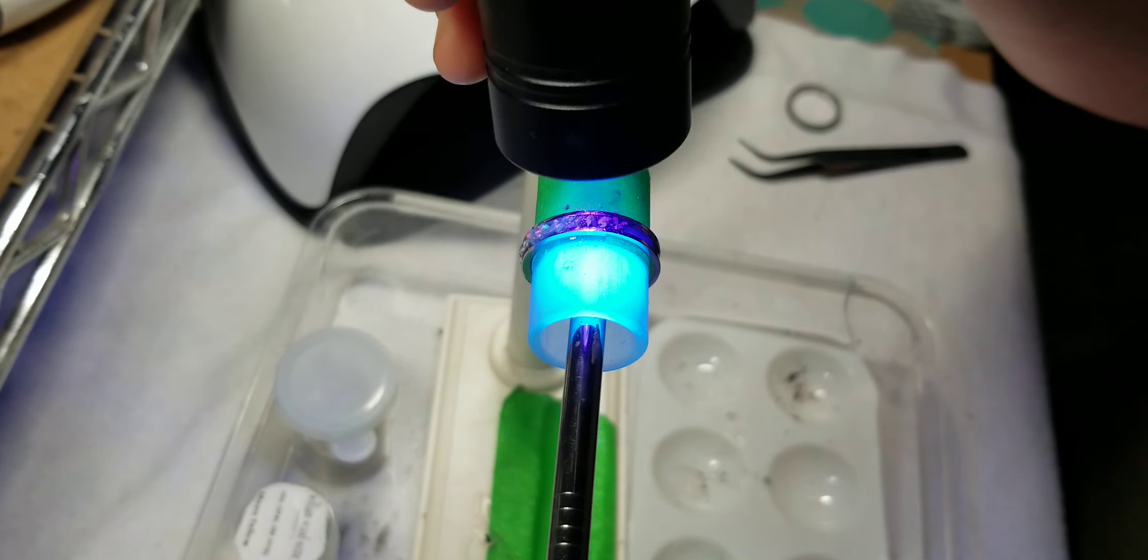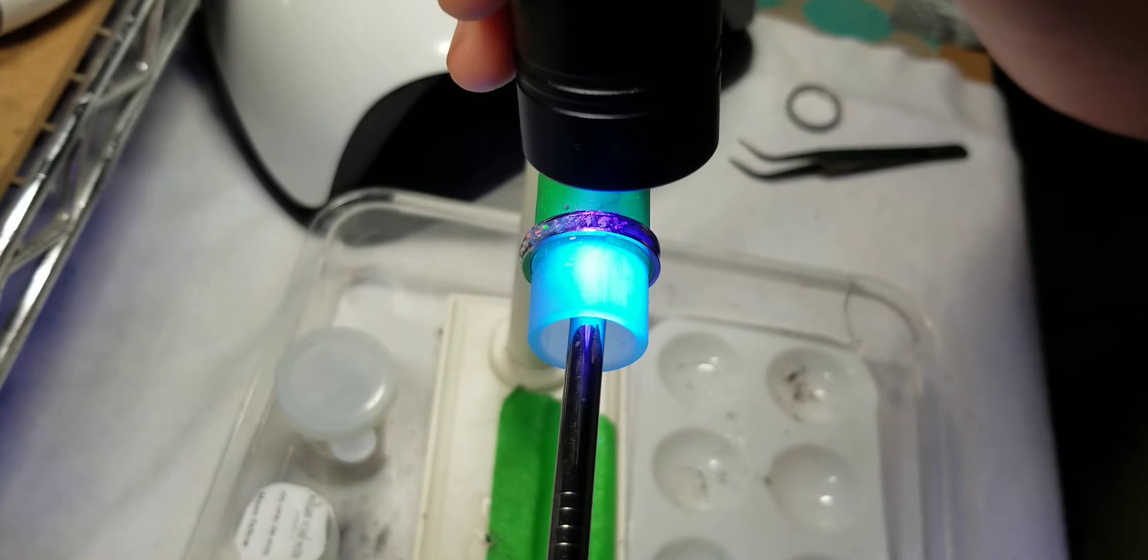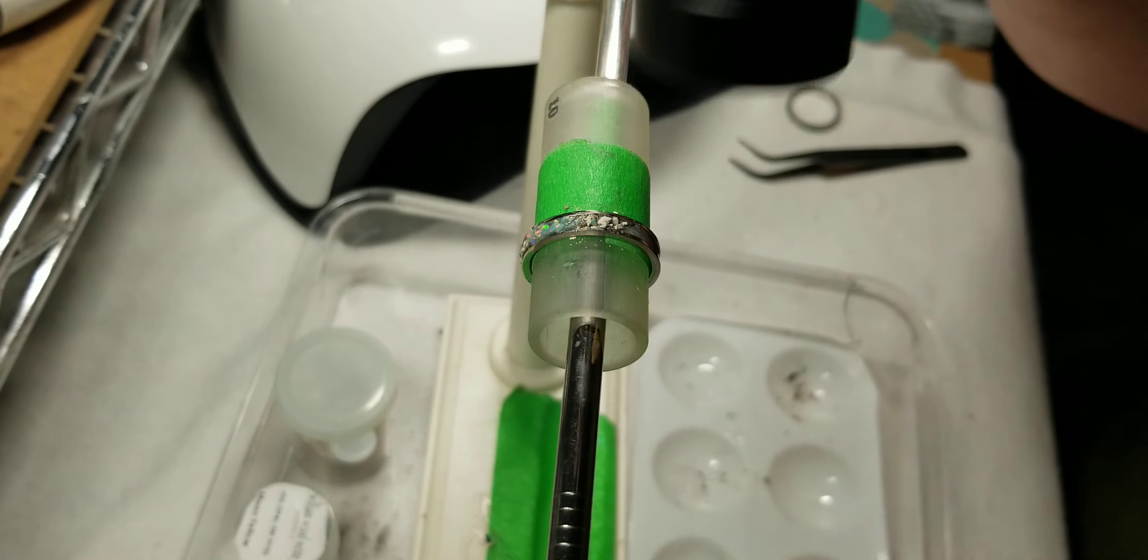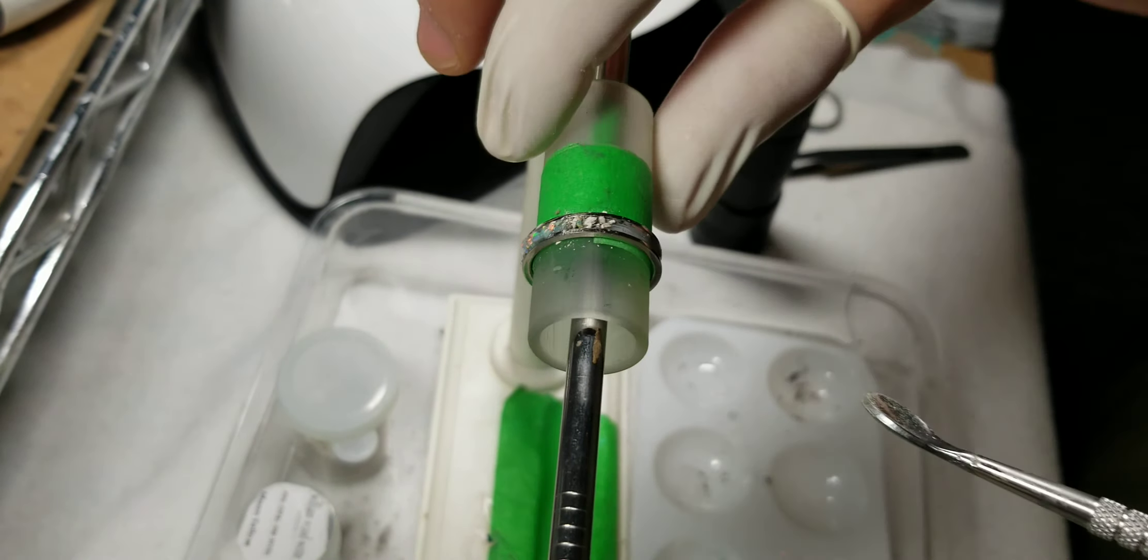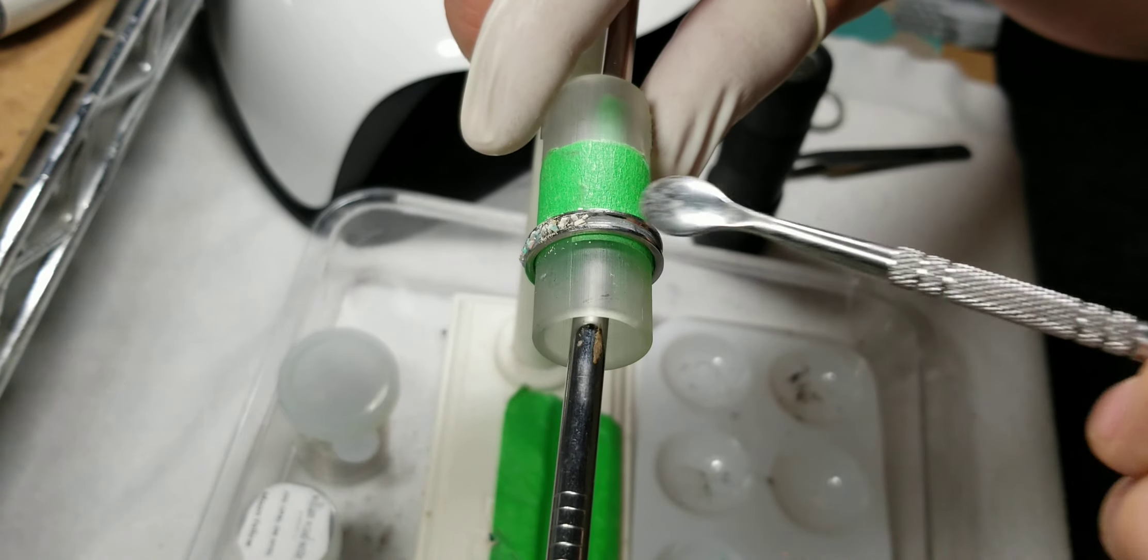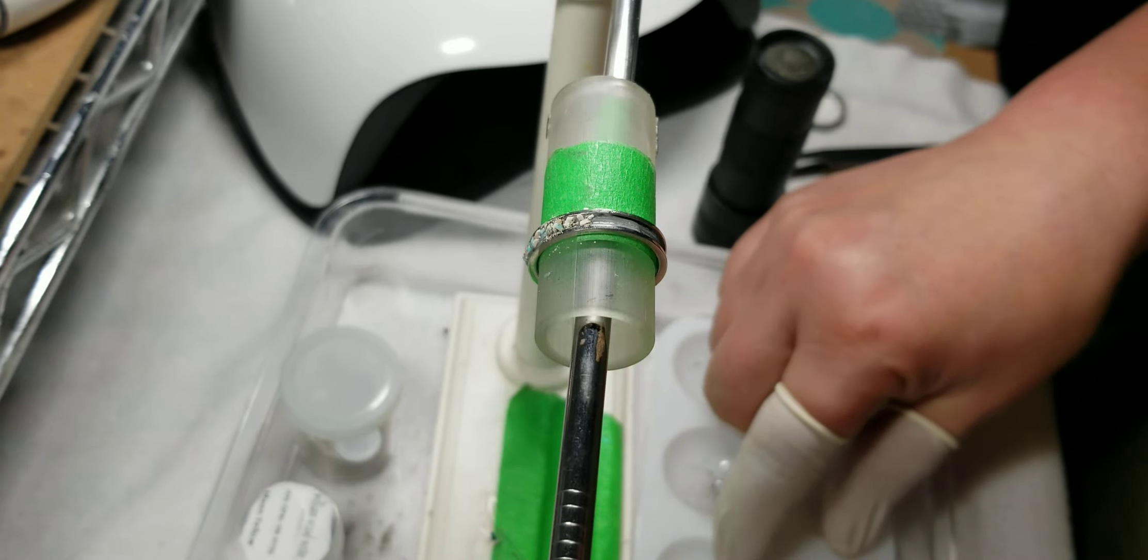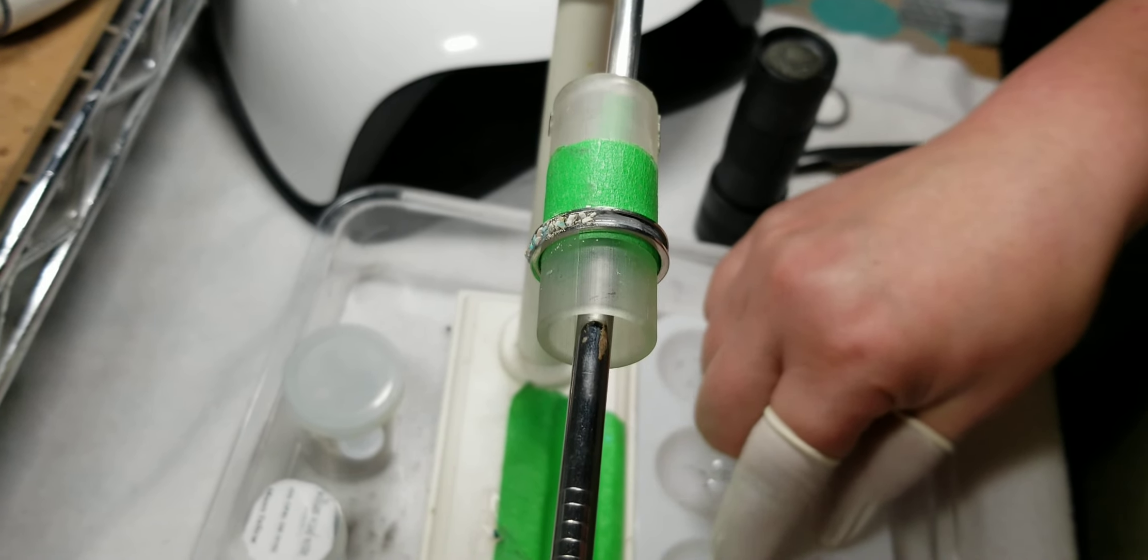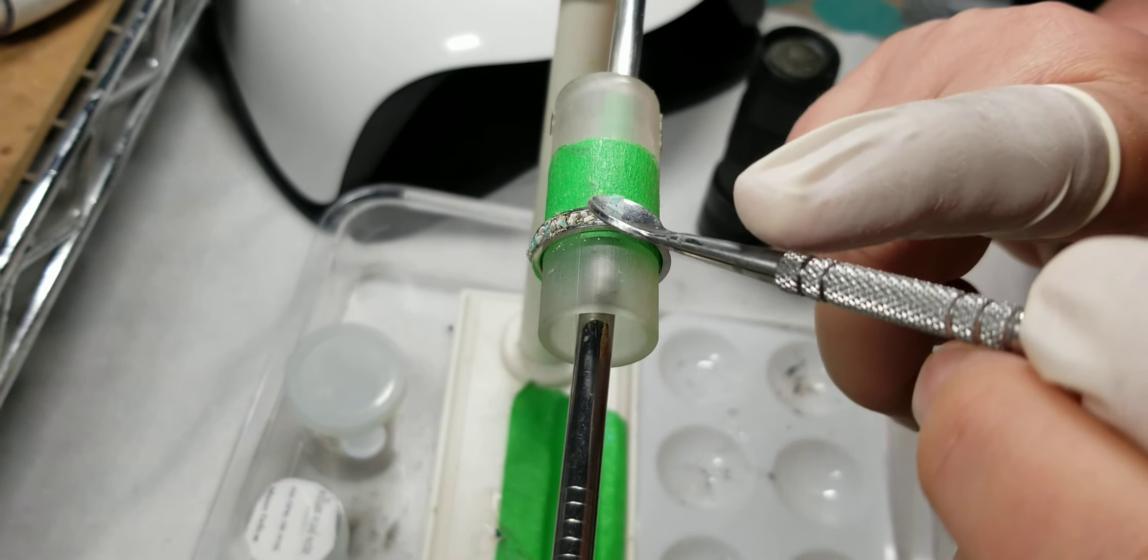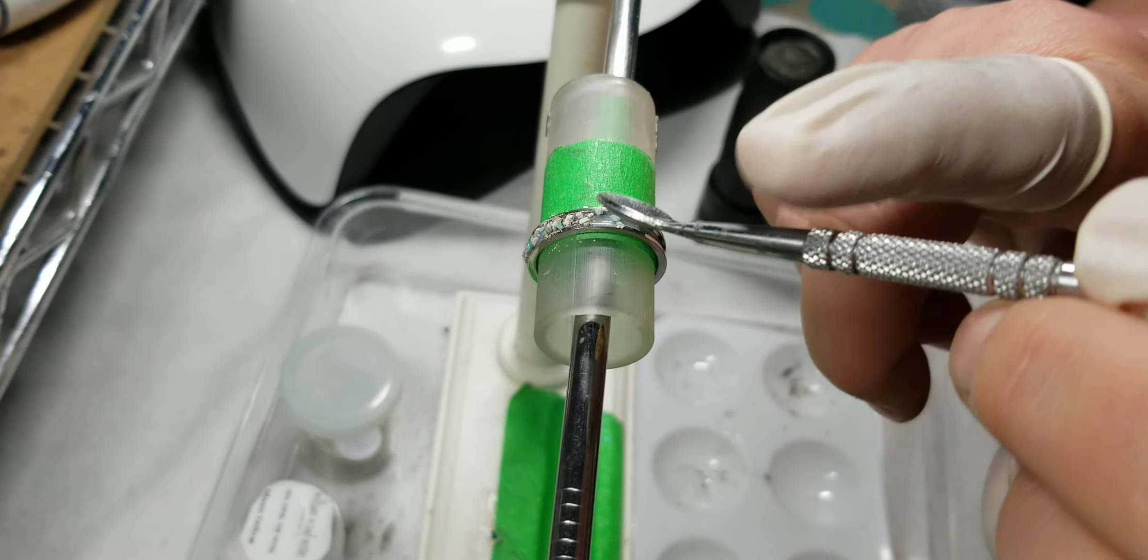So I put the ashes in, just so that you don't get it all runny. See, it's already tried to run down the ring. So you can only put a little bit at a time. The UV resin is kind of a little bit runny; the viscosity is very thin on this stuff.